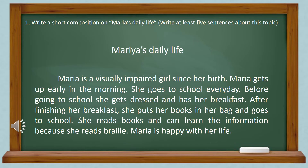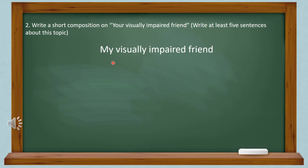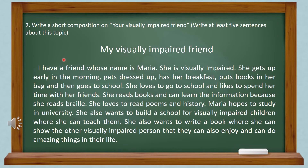With the help of the text, here we can see another question: write a short composition on your visually impaired friend — write at least five sentences about this topic. As I said, you can write more than five sentences. First of all, we have to write the headline: 'My Visually Impaired Friend.' The first line is: I have a friend whose name is Maria. She is visually impaired.